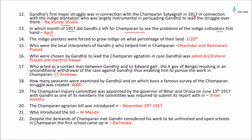Gandhiji left for Champaran to see the problems of indigo cultivators firsthand in April 1917. The indigo planters were forced to grow indigo on 3/20th of their lands. Local interpreters who helped Gandhiji were Dharinder and Ram Narayan Prasad. A case was registered against Gandhiji, so he chose Brajkumar Prasad and Mazrul Haq to lead the Champaran agitation. C.F. Andrews acted as a contact man between Gandhiji and Sir Edward Gate, the Lieutenant Governor of Bengal, resulting in an unconditional withdrawal of the case against Gandhiji.